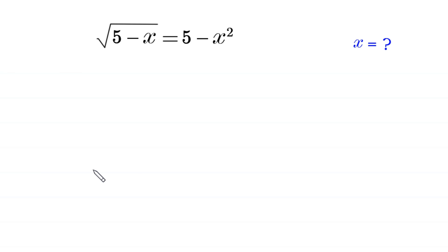Welcome to how to solve this very nice radical equation. Square root of 5 minus x is equal to 5 minus x squared. We need to find all possible values of x.